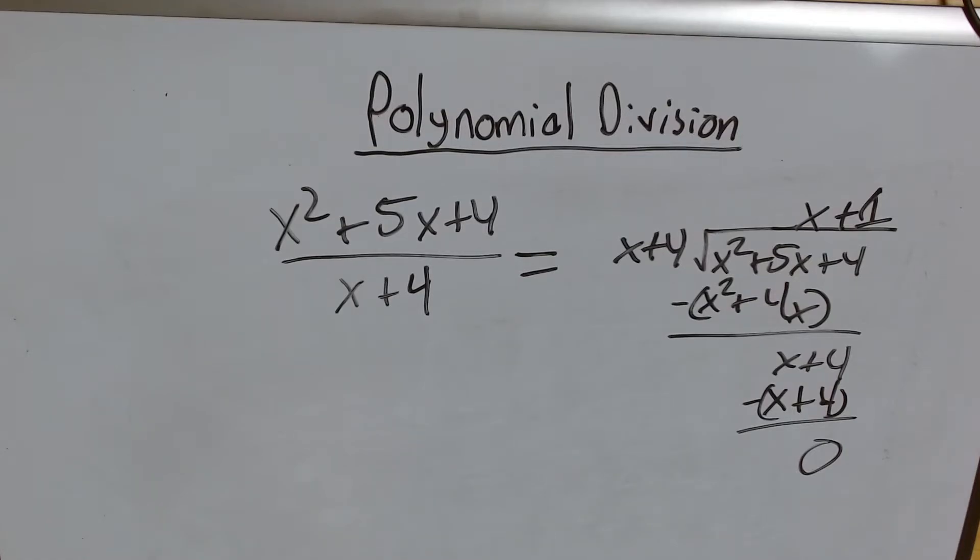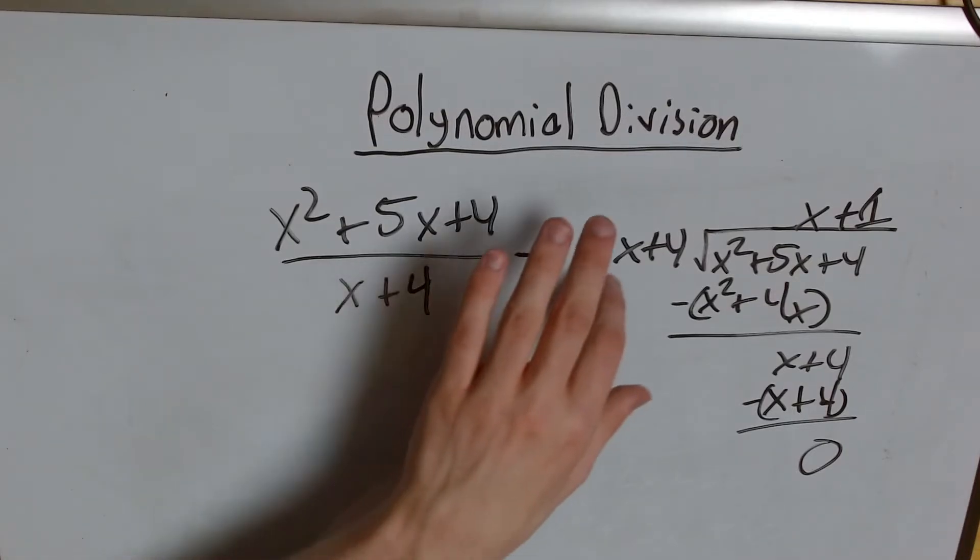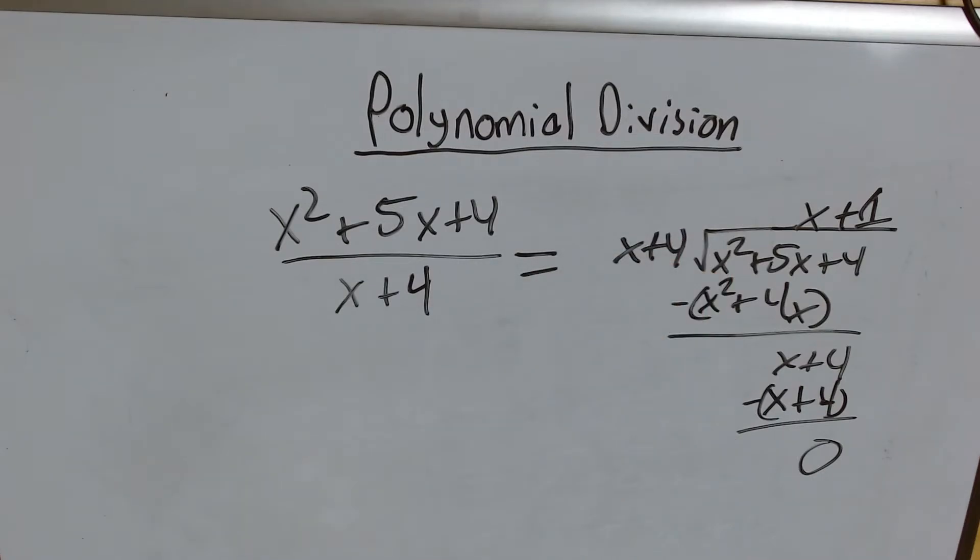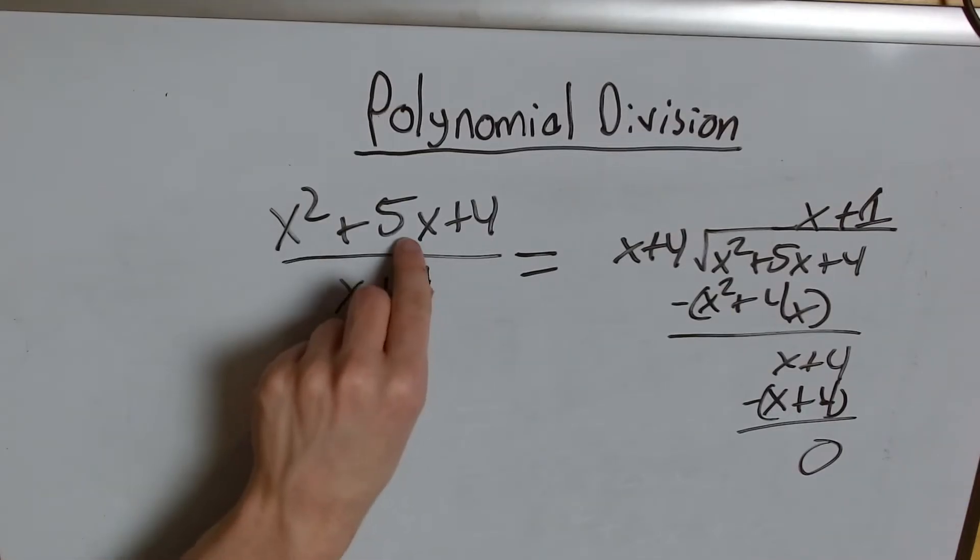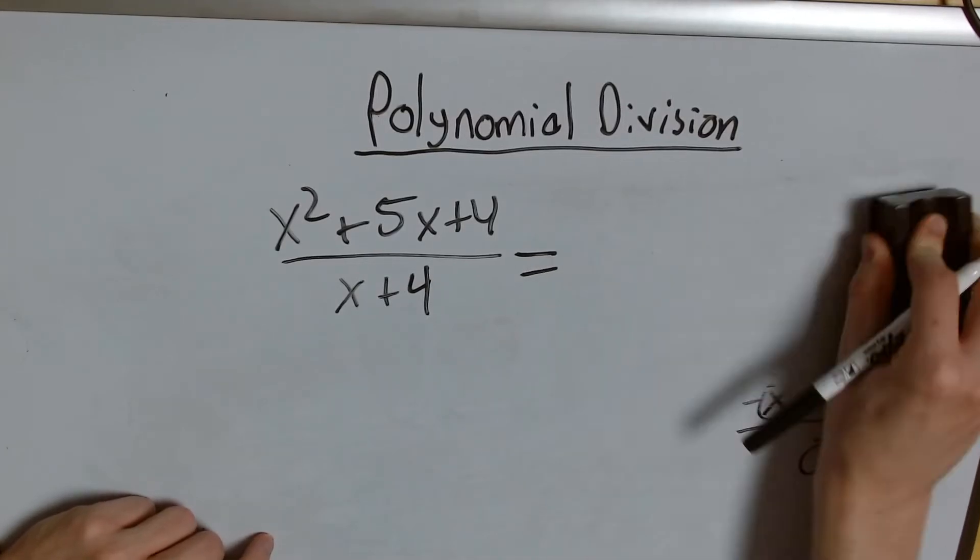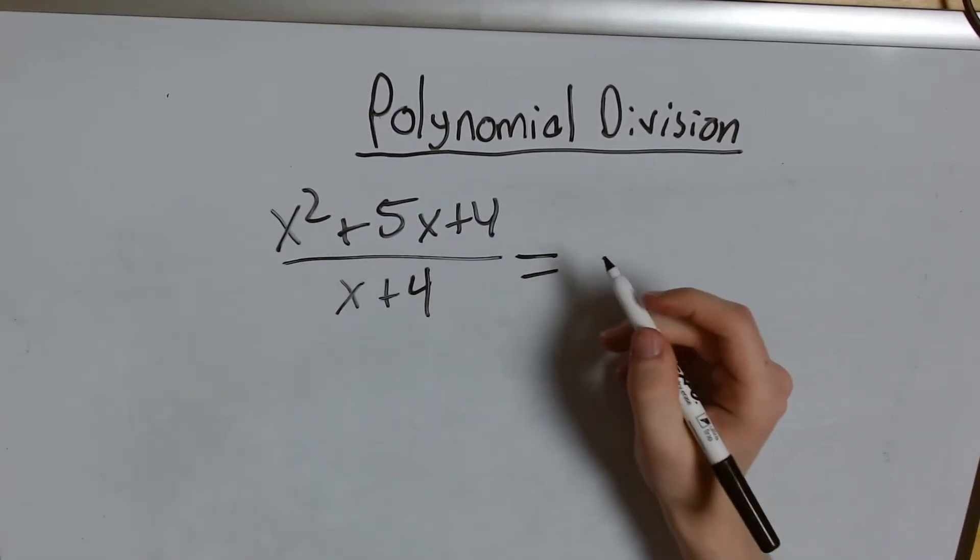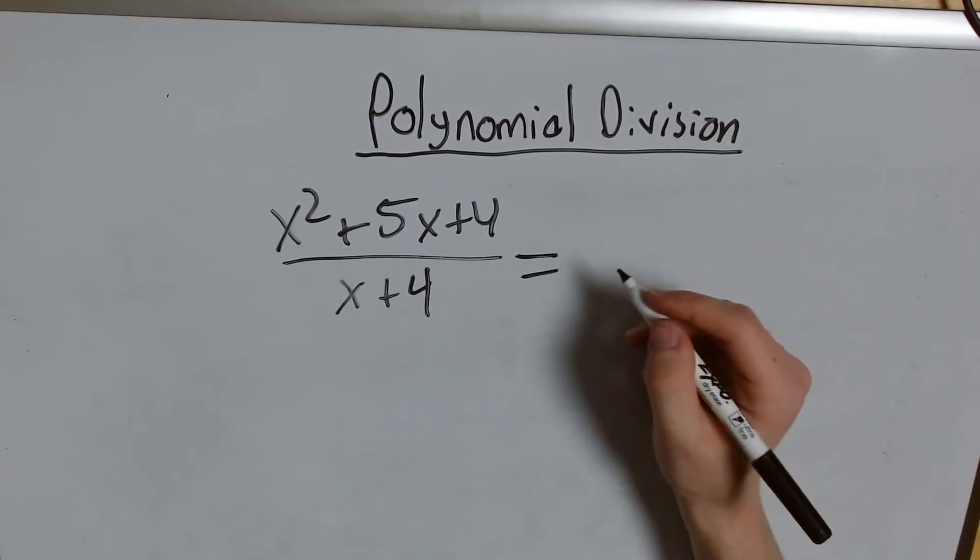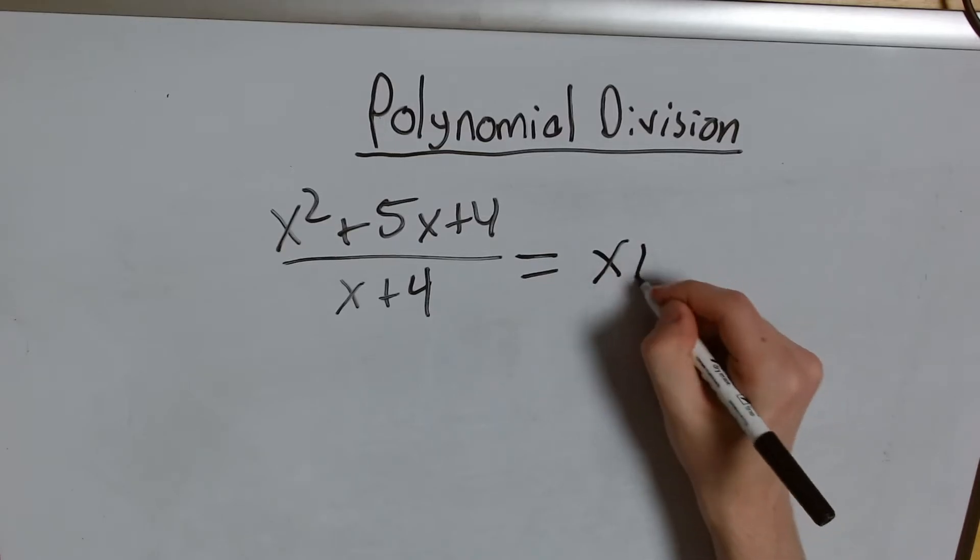What does it mean to have no remainders? It means that my polynomial divides out evenly. What does that mean? Well it actually means x plus 4 is a factor of x squared plus 5x plus 4. What does that mean? Well let's represent first let's represent what we found.